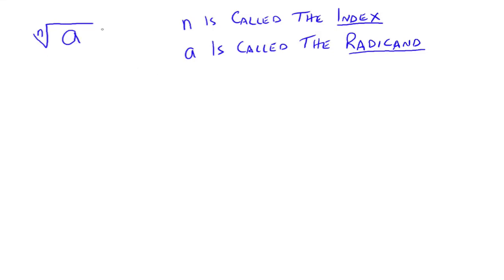n, the little thing inside the wedge here, that's called the index. It's the root you're taking: square root, cube root, fourth root, whatever the case may be. a, what's underneath the radical sign here, that's called the radicand. The whole thing is just called a radical.